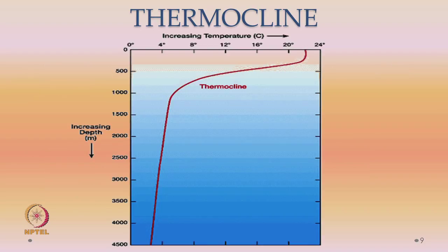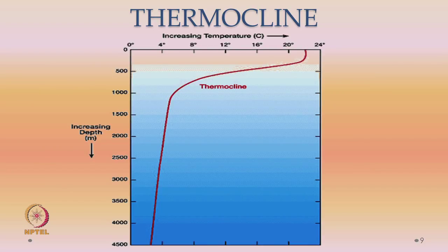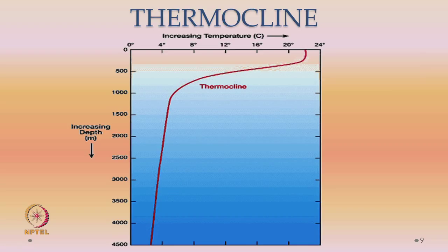What about the thermocline? The thermocline is a region where temperature rapidly decreases with depth. At the surface it is typically about 22 degrees centigrade — in Chennai it would be about 30 degrees — and it goes down to 8 degrees centigrade at about 700 to 800 meters. At about 1 kilometer depth, you have water at a temperature of 4 degrees centigrade.